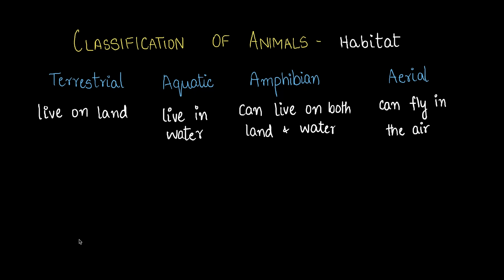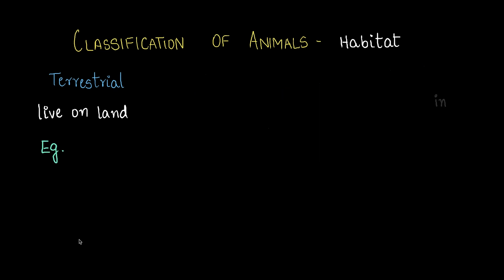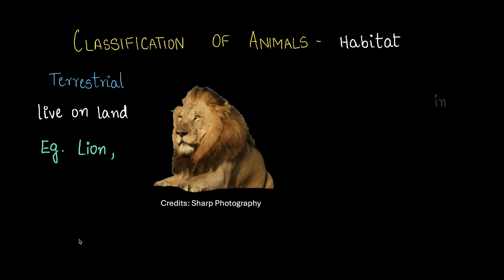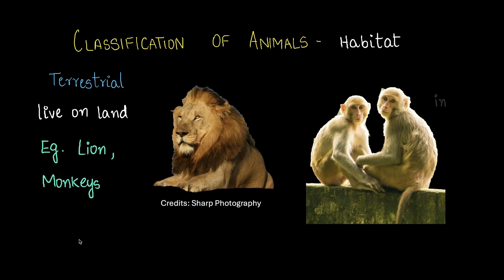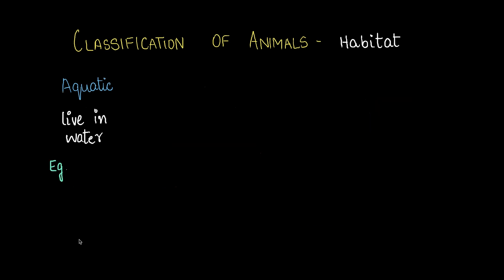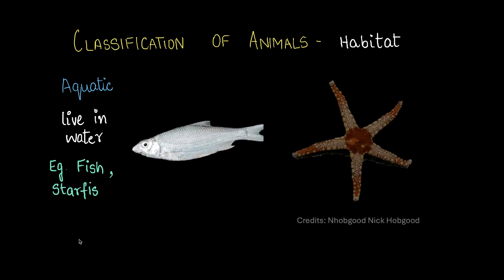For terrestrial animals we have lions, monkeys, humans, dogs, cats, and rabbits — most of the animals you see in daily life apart from birds are terrestrial animals. For aquatic animals, examples include fish, starfish, and jellyfish — anything that lives in water is an aquatic animal.